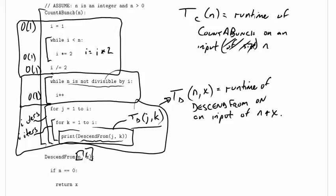And our rules about how to do analysis of sequential code say, however long that first chunk takes, we'll add it to however long the next chunk takes, add that to however long the next chunk takes, and that will give us a runtime for the whole thing.